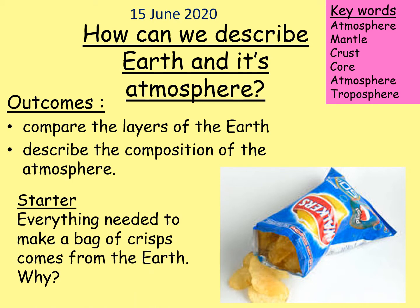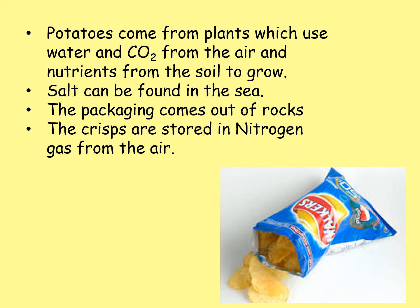I've got an image here of an open bag of crisps, and everything in that bag of crisps comes from the Earth. Crisps are made from potatoes, so obviously they come from under the ground where they grow, and the way they grow is through photosynthesis and respiration. Everything needed for those processes comes from carbon dioxide in the air, nutrients in the ground, and water that comes up through the ground into the plants.